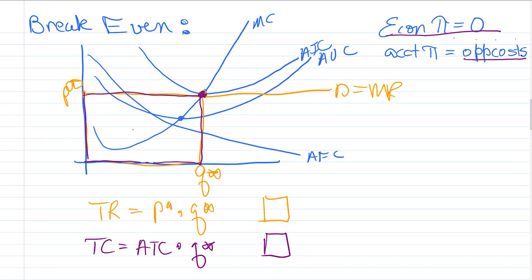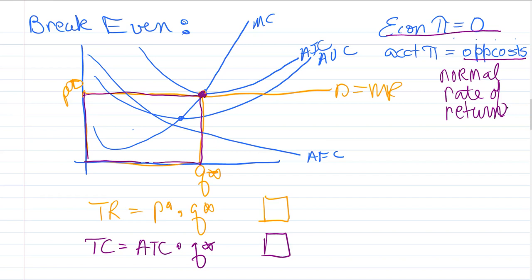Essentially, the accounting profit is reflective of a normal rate of return in that industry, and that will vary from industry to industry based on the characteristics of the industry, primarily the risk associated with producing that good or service. So the economic profit is zero, but the accounting profit is positive and just equal to your next best choice. That's what keeps you in there and keeps you from making a change decision.